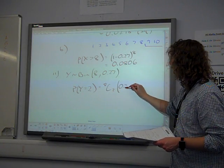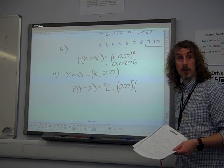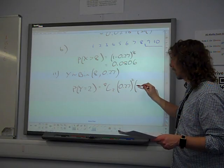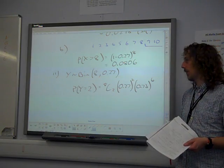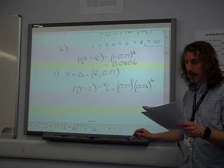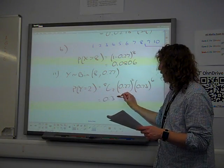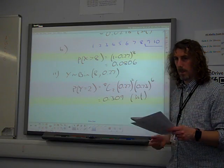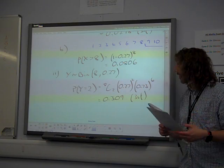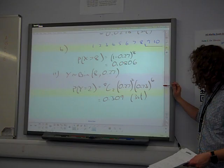So your expression has got to be 8C2. That's two successes. And there would be six failures. And so that's 0.73, isn't it? To the power of six. Or (1 minus 0.27) to the power of six. And that gives you 0.309 to three significant figures. Notice that that line is an essential line in this, because it asks you for that expression for the probability.